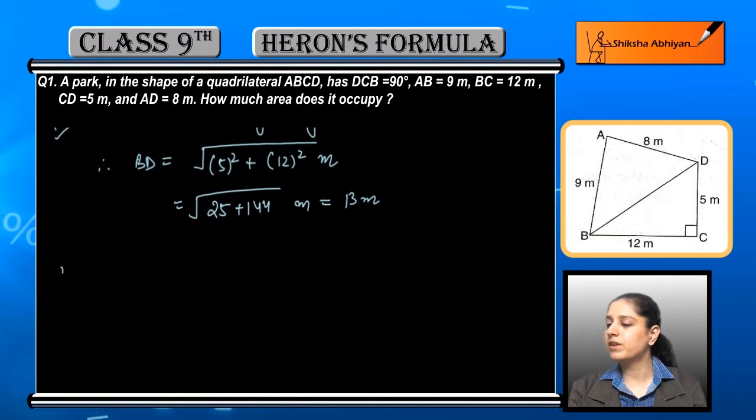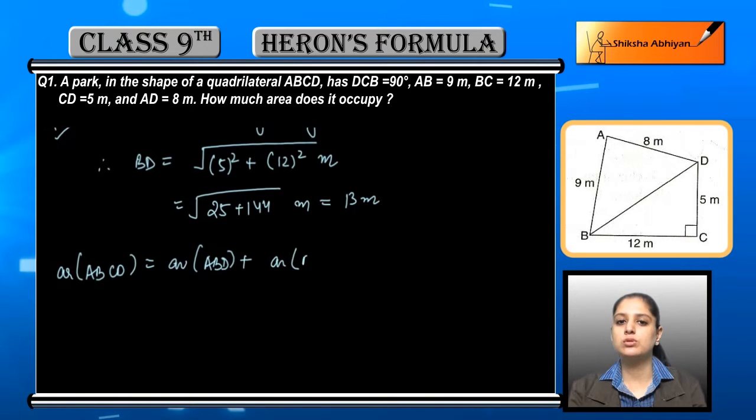So the area of ABCD, which is the whole quadrilateral given, is equal to the sum of the areas of triangles into which it is divided. The diagonal divides it into two triangles: ABD and BCD. So if we add both areas, it equals the area of the quadrilateral.